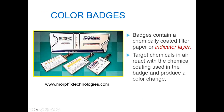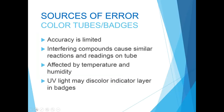The Morphix Technologies badges contain a chemically coated filter paper called an indicator layer — target chemicals react with the chemical coating producing a color change. The sources of error with these direct-reading colorimetric devices are similar to what you'd have with standard color detector tubes: accuracy is more limited, there can be interfering compounds that cause similar color reactions, and environmental conditions like sunlight might cause a color to fade. But they play a valuable role, like any direct-reading instrument.